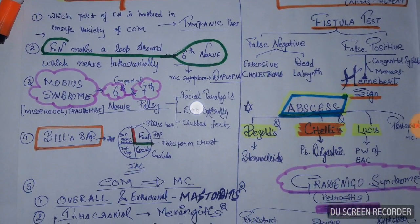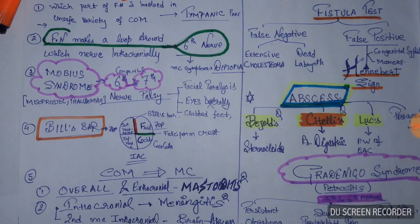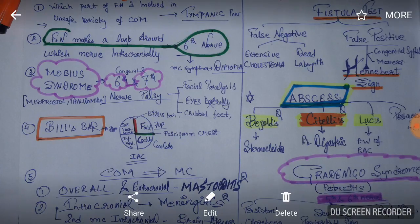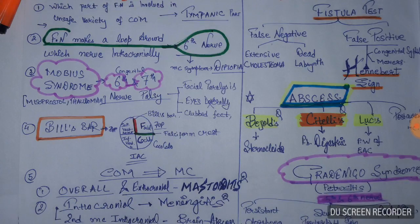Moebius syndrome is a congenital syndrome with sixth and seventh nerve palsy. There will be facial palsy, and the eyes cannot be moved laterally due to lateral rectus palsy. It also has mixed features like chest abnormalities. Moebius syndrome is seen in newborns due to misoprostol, thalidomide, or cocaine used by the mothers.